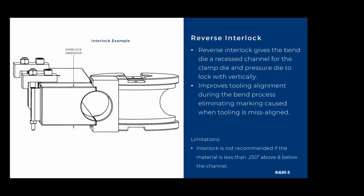Reverse interlock gives the bend die a recessed channel for the clamp and the pressure die to lock with vertically. It improves tooling alignment, helps on older machines, and during the bending process will help eliminate marking caused by tooling misalignment. Without this feature, the clamp could possibly ride up and down, putting markings on the top and bottom of the tube. The limitation is that the interlock is not recommended if the material above and below the channel is less than a quarter inch.